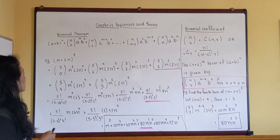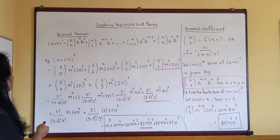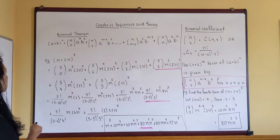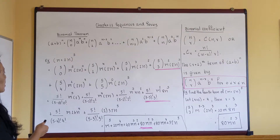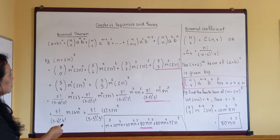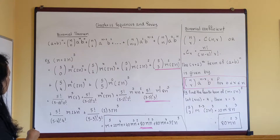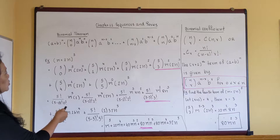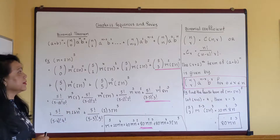My n here is five, so the binomial coefficients go from five choose zero, five choose one, five choose two, five choose three, five choose four, five choose five — just like the formula: n choose zero through n choose n.